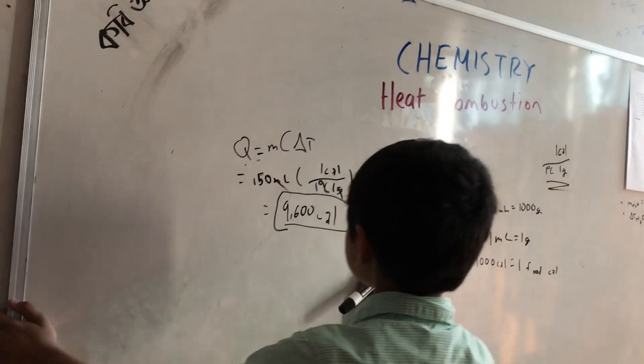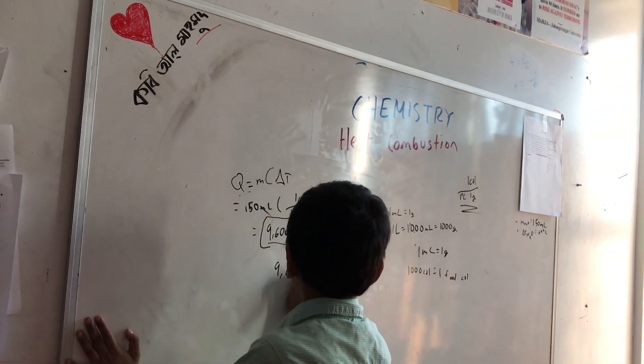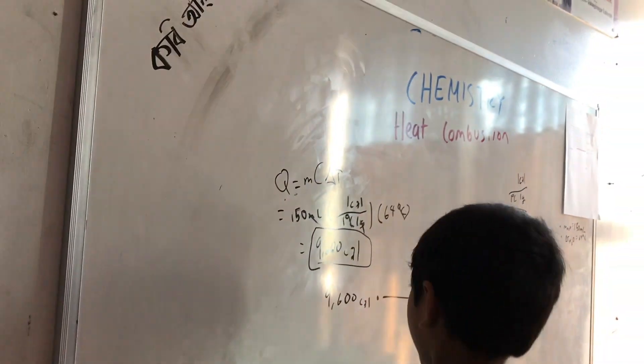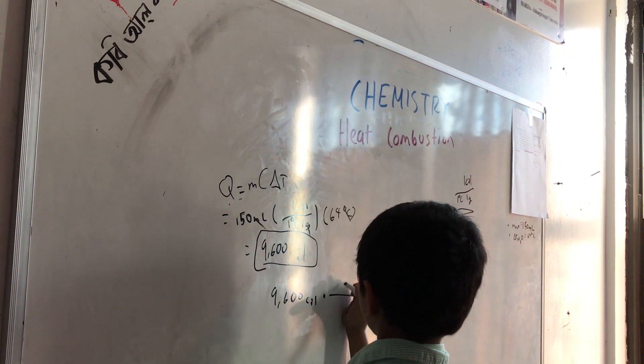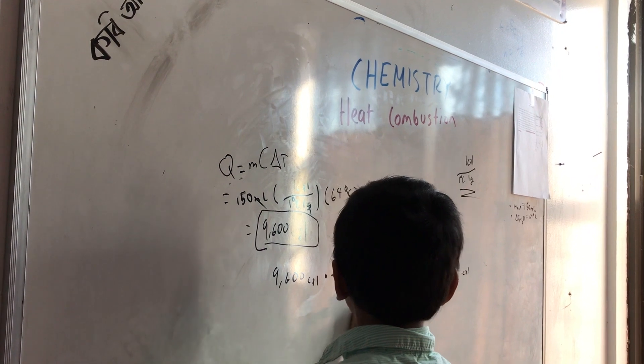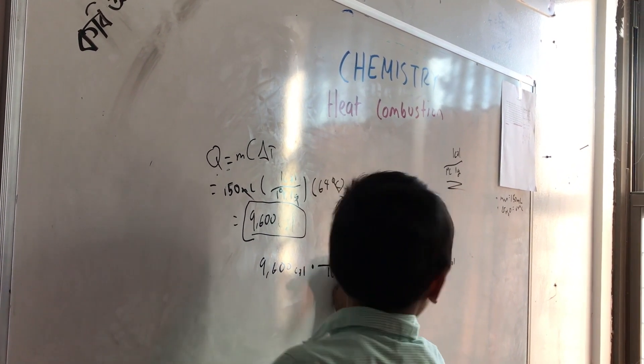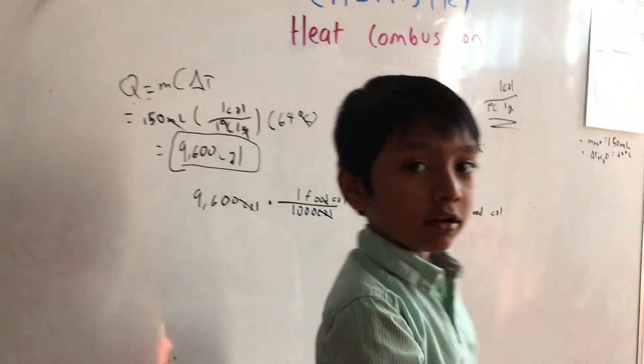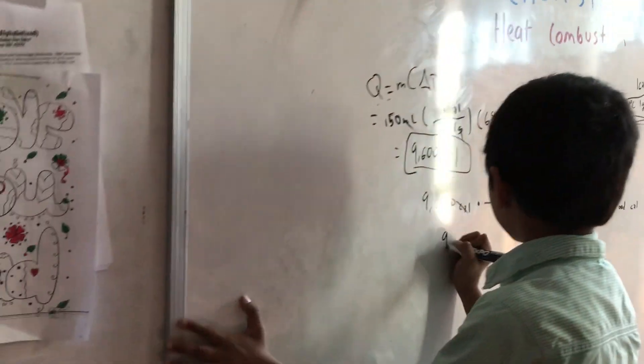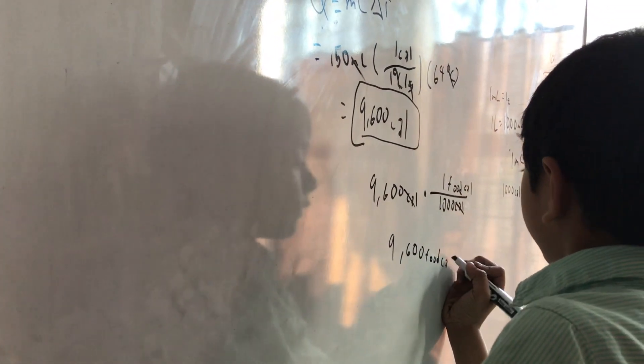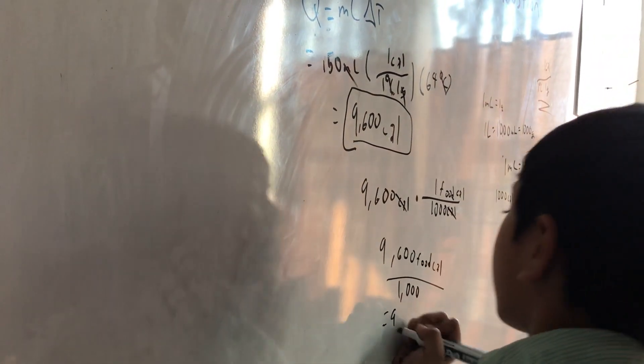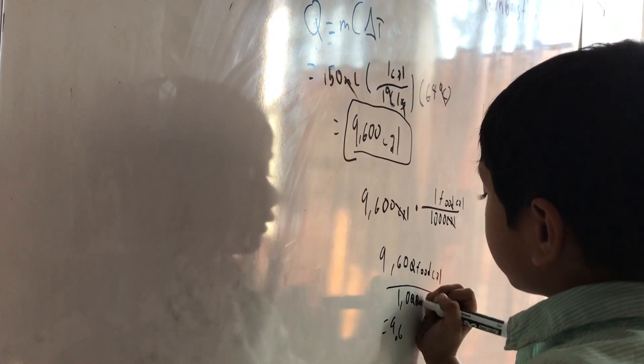So this should be easy. 9,600 calories, you just use the conversion times, we use the conversion. So 1,000 is on the bottom, 1,000 calories, and one food calorie is on the top. Now calorie calories cancel. Never eat your potato chips when you burn them. 9,600 divided by 1,000.